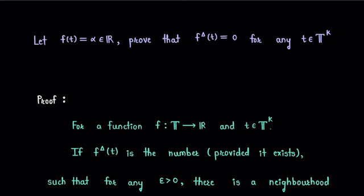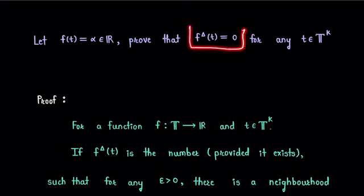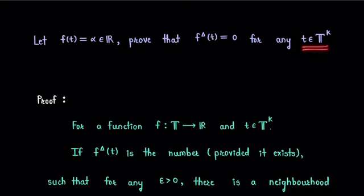The question is: let f be a function defined on a time scale T such that f(t) equals alpha, where alpha is some real number. Prove that the delta derivative of f is 0 for any point t belonging to the set T to the power k.